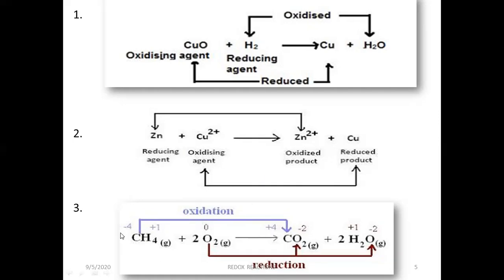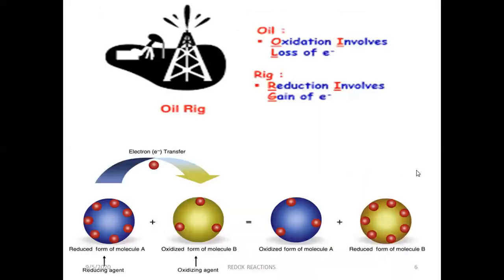The third example is CH4, that is methane, plus oxygen gives us carbon dioxide plus H2O. Here, hydrogen is removed from CH4 and given to O2, so this is oxidation. While O2 is getting reduced because hydrogen is being added to it.